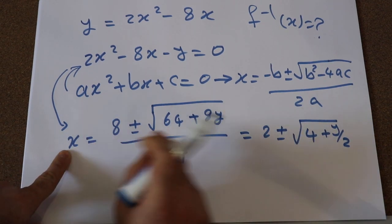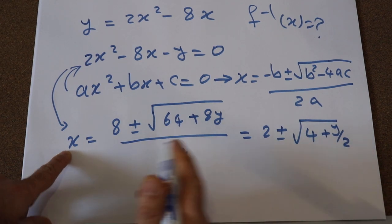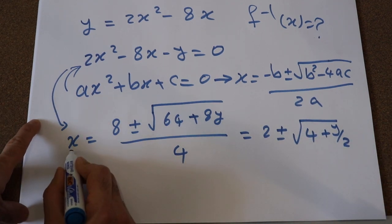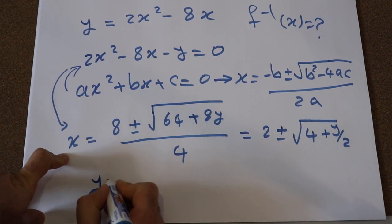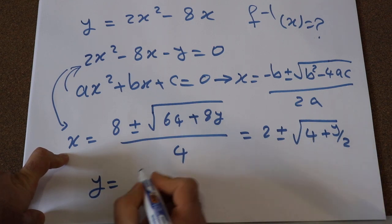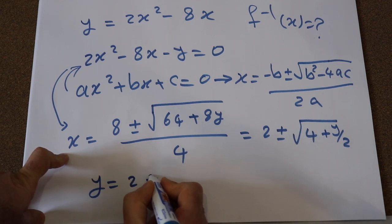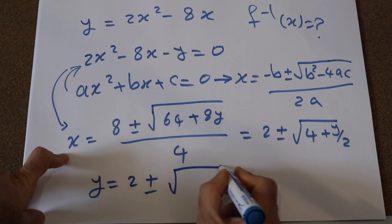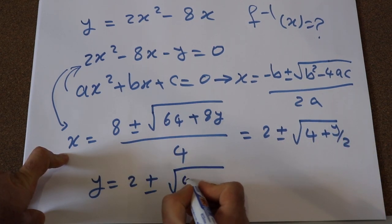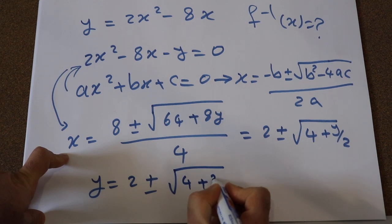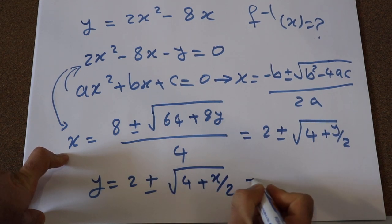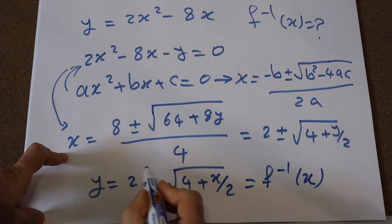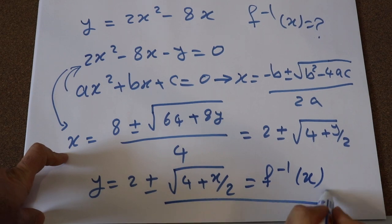Now you have x as a function of y, so all you need to do is wherever you see x, write y, and wherever you see y, write x. And that is the inverse of the function. That's the solution.